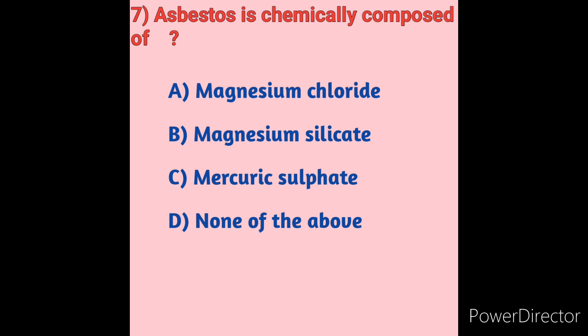Question 7: Asbestos is chemically composed of — Option A: Magnesium Chloride, Option B: Magnesium Silicate, Option C: Mercuric Sulphate, Option D: None of the above. Asbestos is the name given to a group of naturally occurring fibrous minerals resistant to heat and corrosion. It is composed of hydrated magnesium silicates and is associated with diseases of the thoracic cavity, respiratory infections, lung cancer, and asbestosis. Option B — magnesium silicate — is the correct answer.